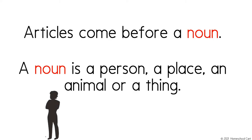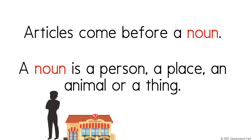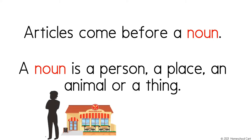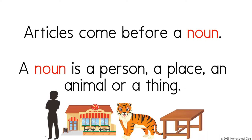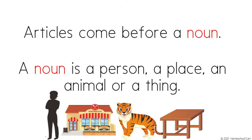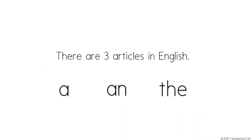Now, pay attention to this very special word. It's an article. Articles come before a noun. A noun is a person, a place, an animal, or a thing. In the English language, there are three articles: a, an, and the.